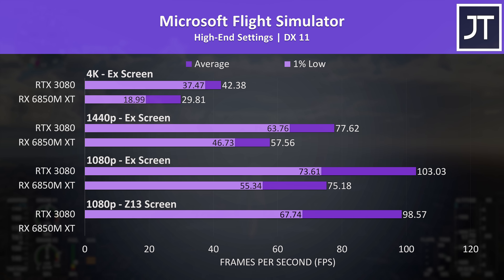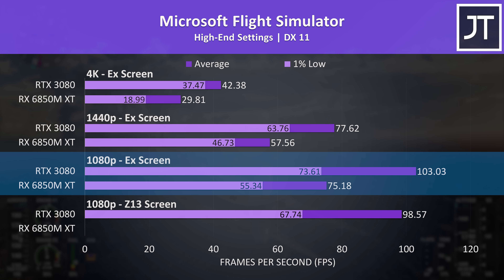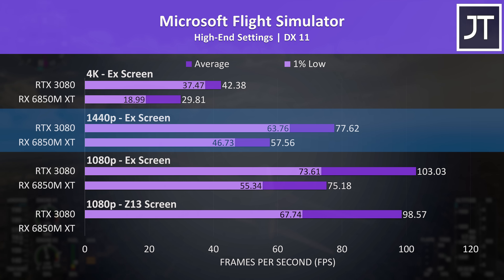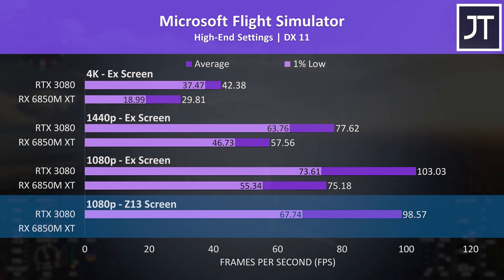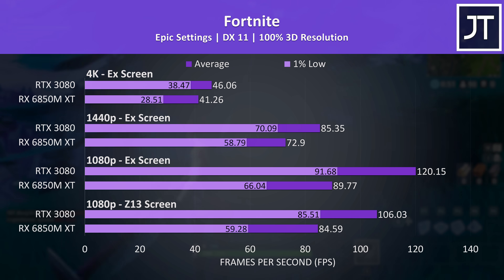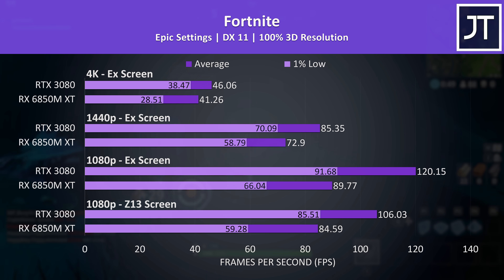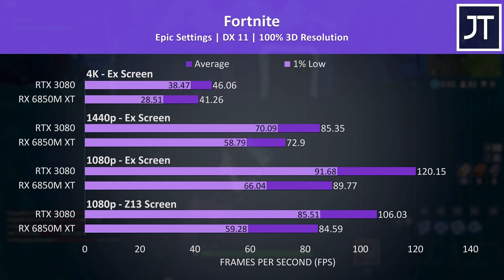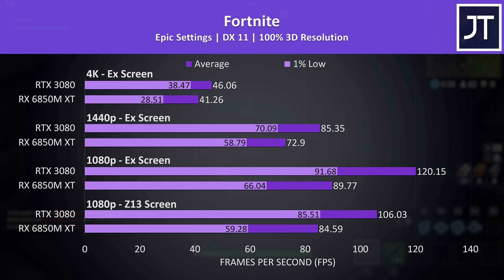Microsoft Flight Simulator also had big gains with Nvidia — this game had the biggest performance gap at 1080p and 1440p out of all 14 titles tested, and for some reason the game wouldn't even run on the Z13 screen at 1080p with the 6850M XT, though it still ran fine on the external screen. Fortnite generally favors Nvidia graphics, and sure enough the 3080 was offering big improvements over Radeon here. This game has DLSS support, so we could optionally use that to further boost Nvidia, but even without it Nvidia had a good lead.